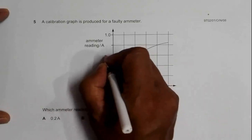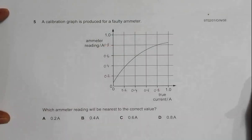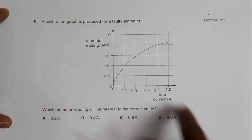So the question is: which ammeter reading will be nearest to the correct value? We have to find which ammeter reading will be the same as the true current, or vice versa.